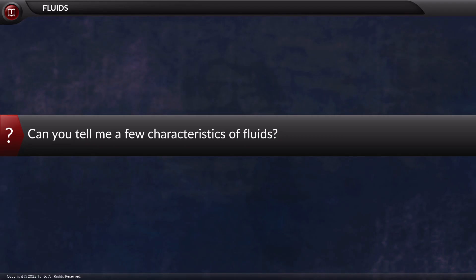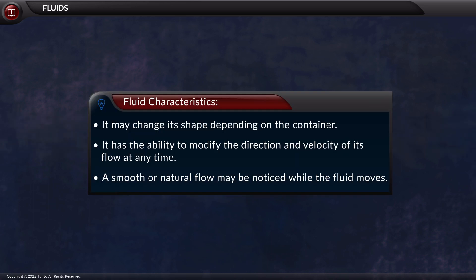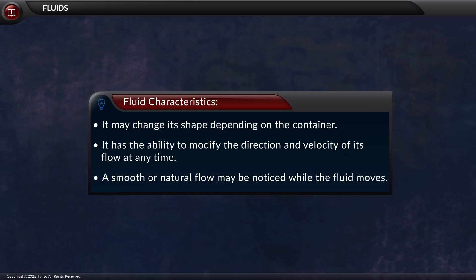After learning about the types of fluid flow, let's look at a few characteristics of fluids. A fluid may change its shape depending on the container it is in. It has the ability to modify the direction and velocity of its flow at any time. A smooth or natural flow may also be noticed while the fluid moves.